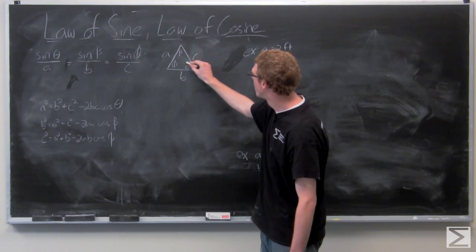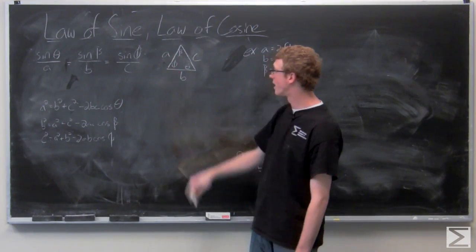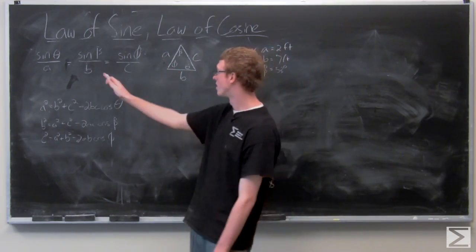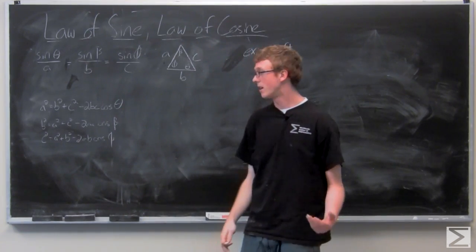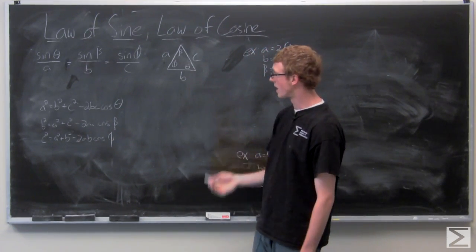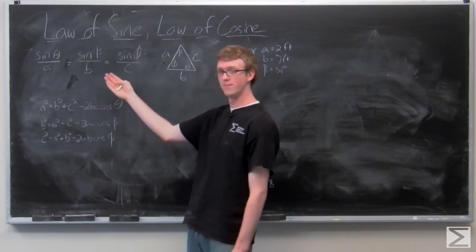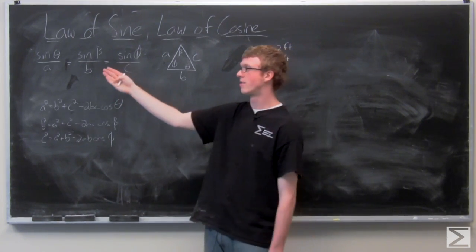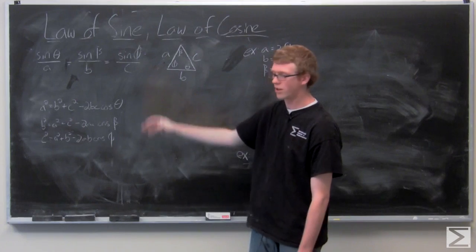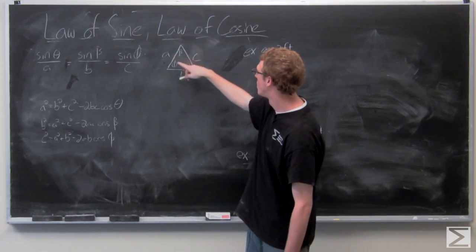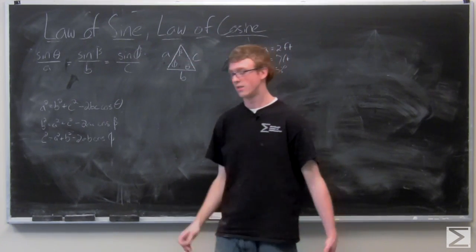So we have theta here, A over here, equals the sine of an angle beta divided by the opposite side. So sine of beta over B equals sine of theta over A, which is also equal to the sine of phi, this angle, over C, its opposite side.